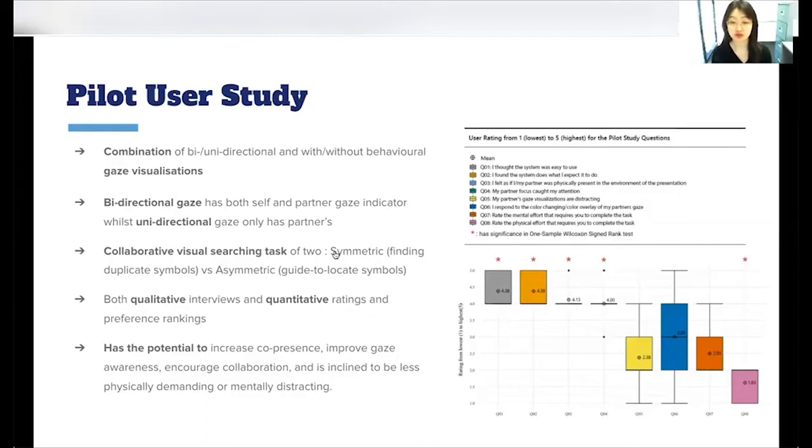Through interview and preference ranking, we also understood that the users prefer bi-directional gaze with behaviors, as noted by the users as more immediate feedback and easier to notice, hence making their coordination more confident with less descriptions to confirm.